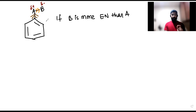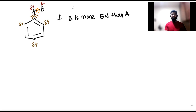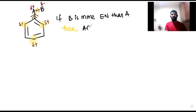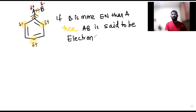Those electrons are pulled from only the ortho and para positions — these are the only two positions which get affected. So if B is more electronegative than A, then the group AB is said to be an electron withdrawing group, or EWG.